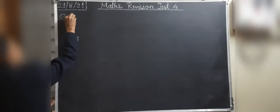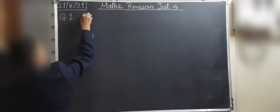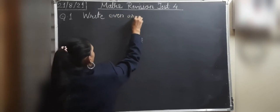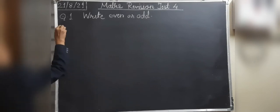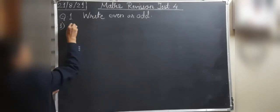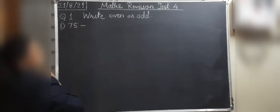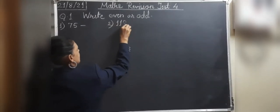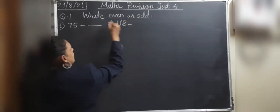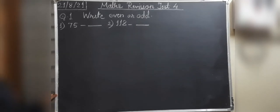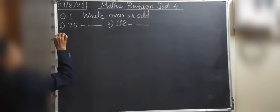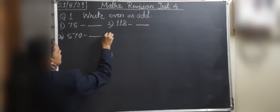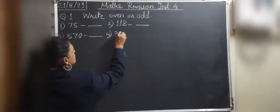Question number 1: Write even or odd. First number is 75 — is it even or odd? You have to write it on top of it. Then number 2 is 180 — write even or odd in front of this. Next one is 570, and the last one is 361.